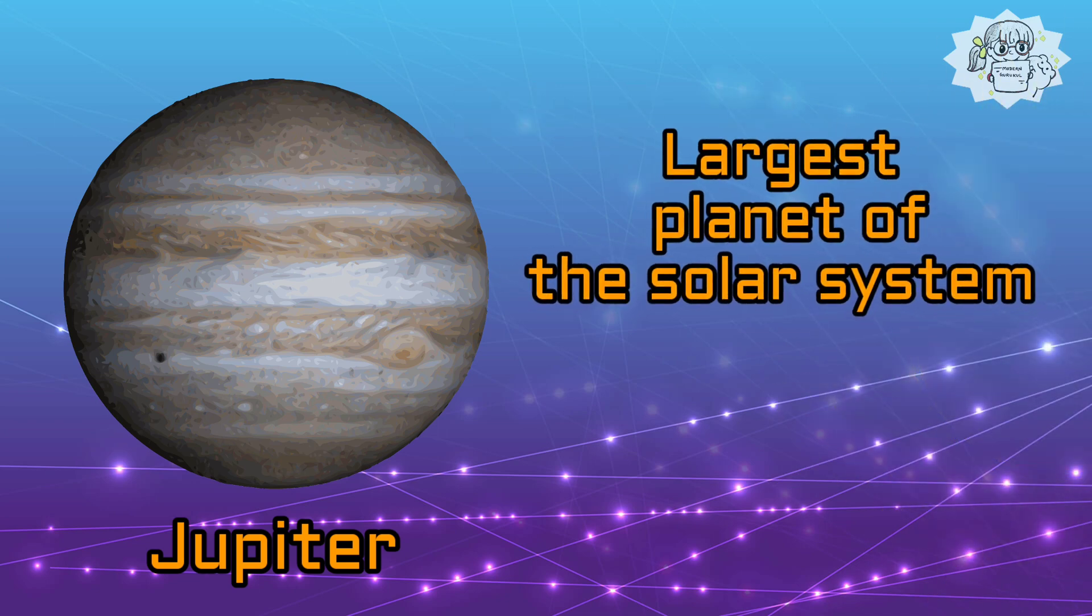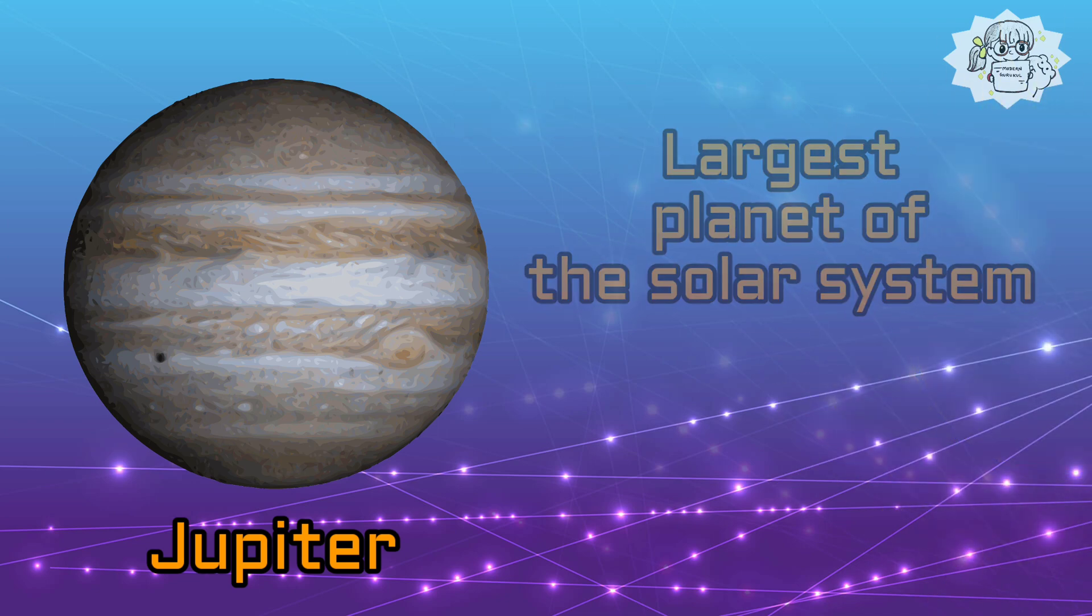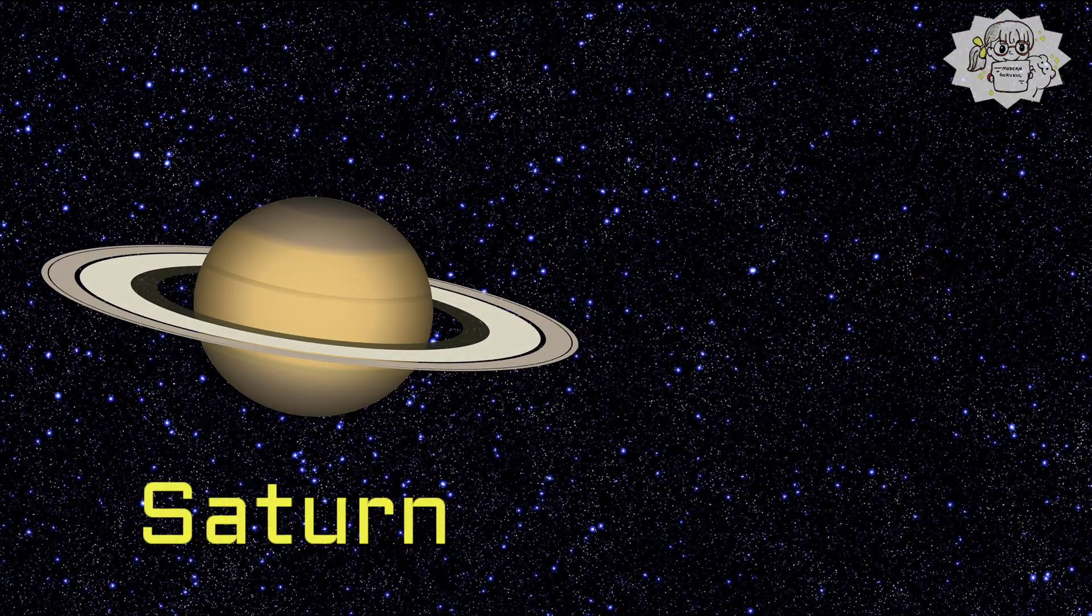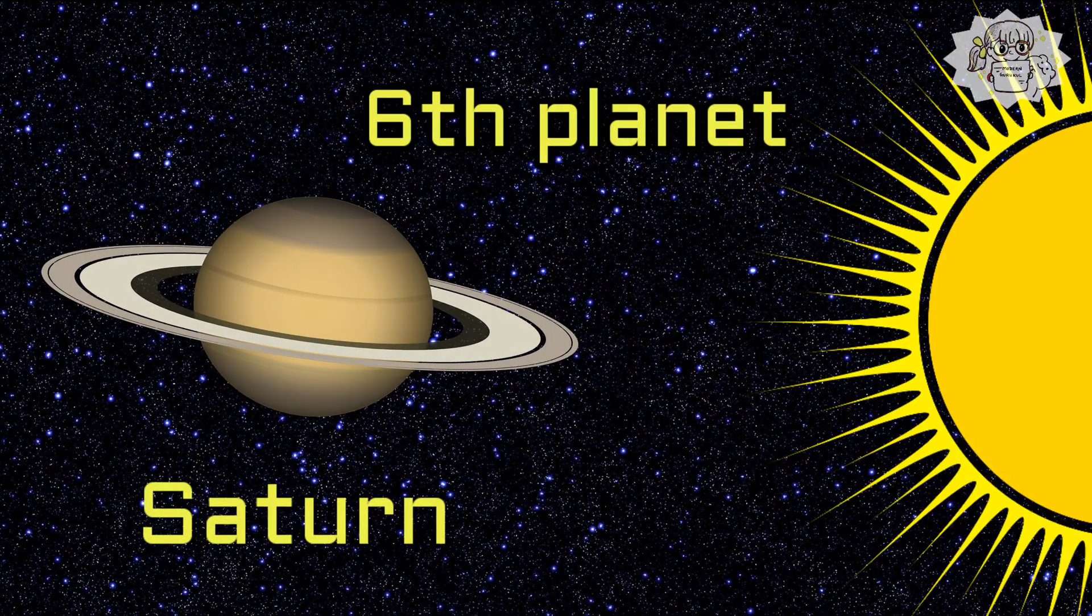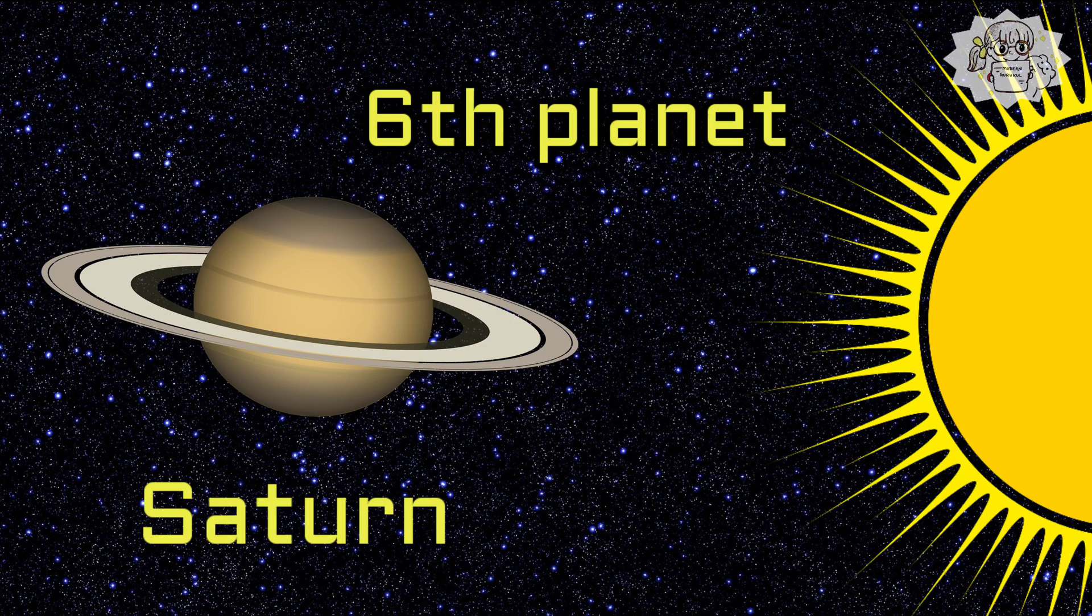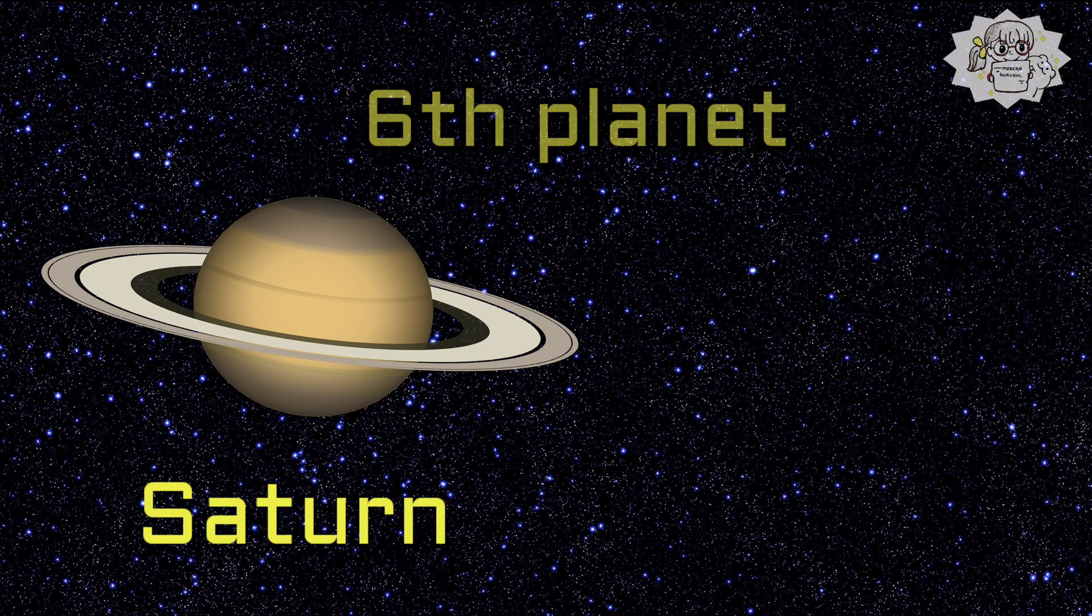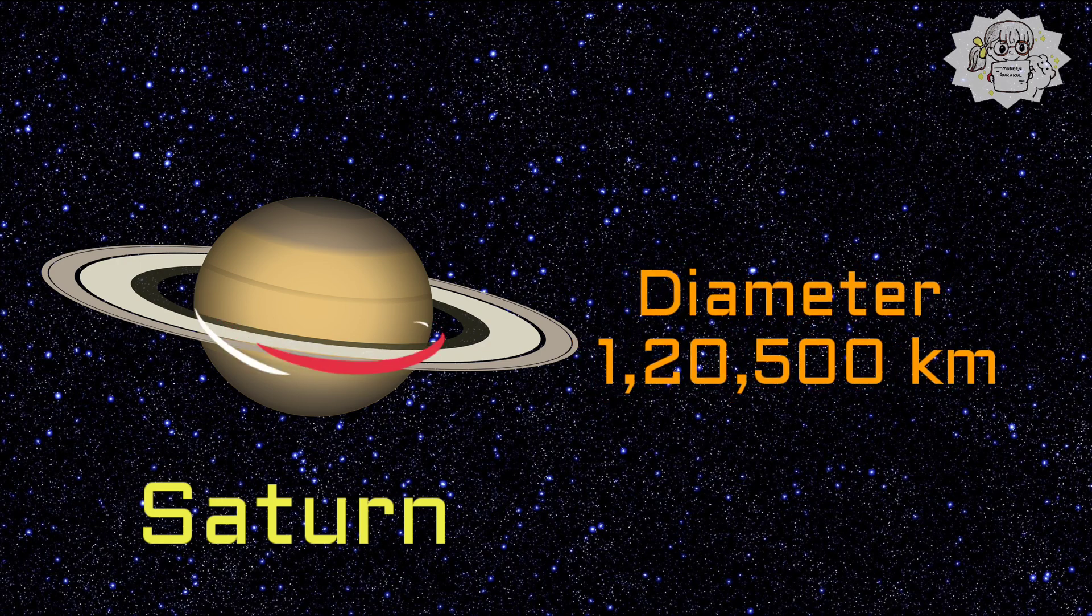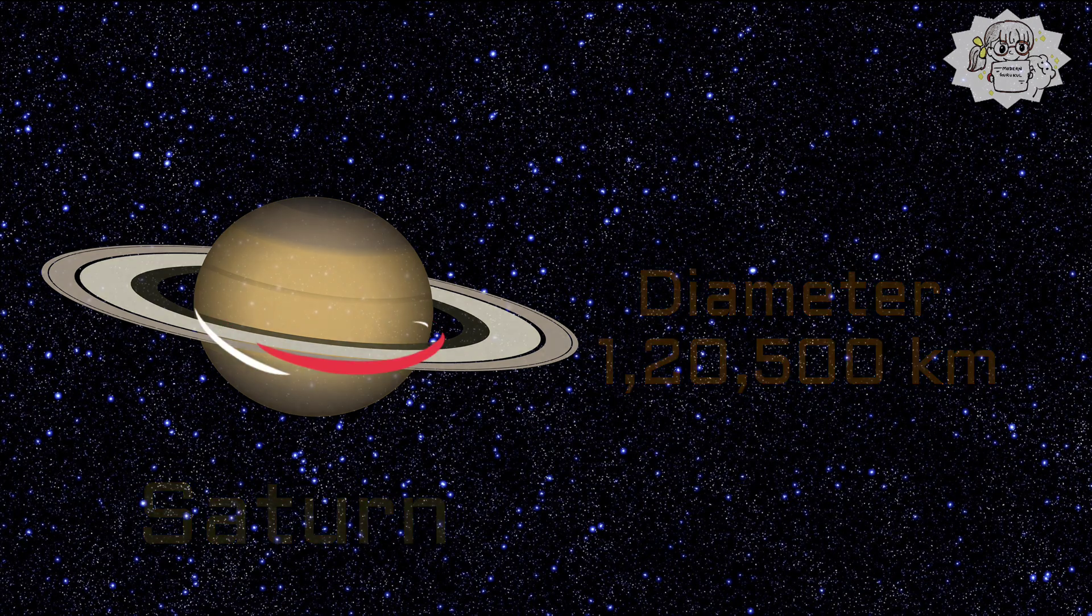Saturn is the sixth planet from the Sun. It is a gas giant almost as big as Jupiter with an equatorial diameter of about 120,500 kilometers.